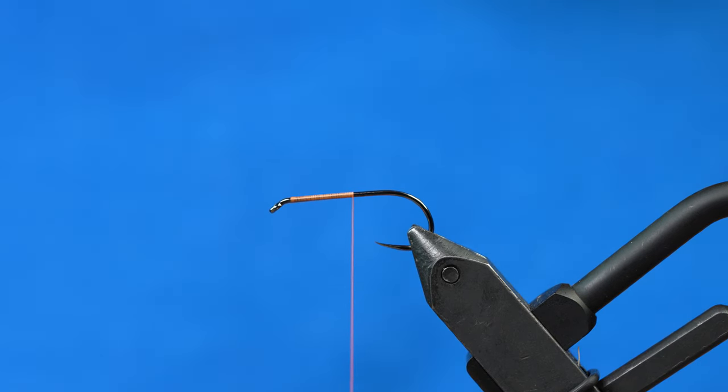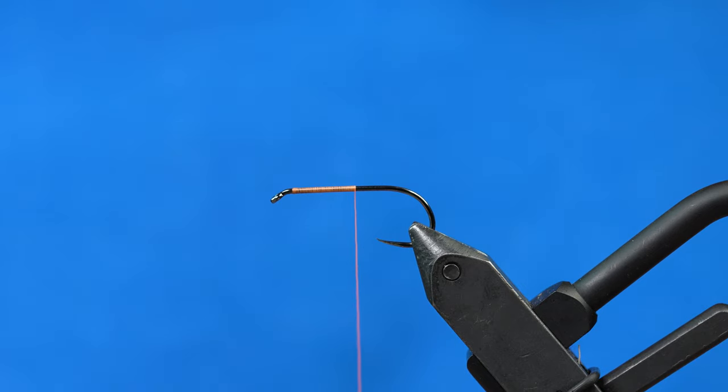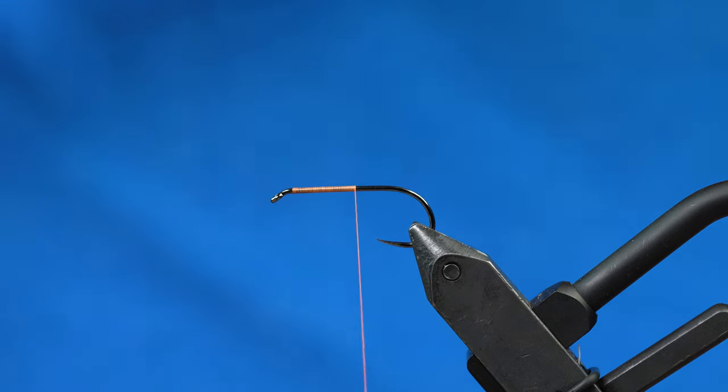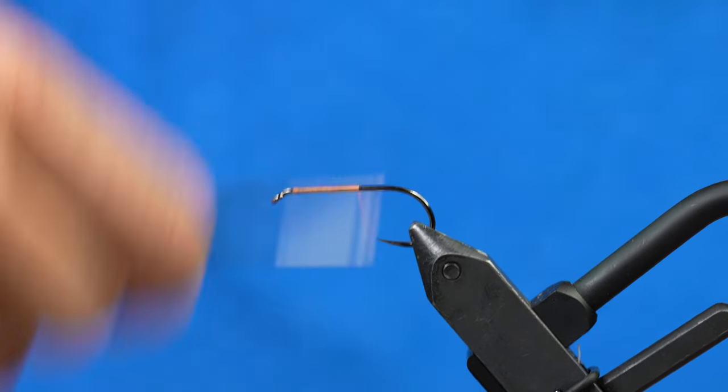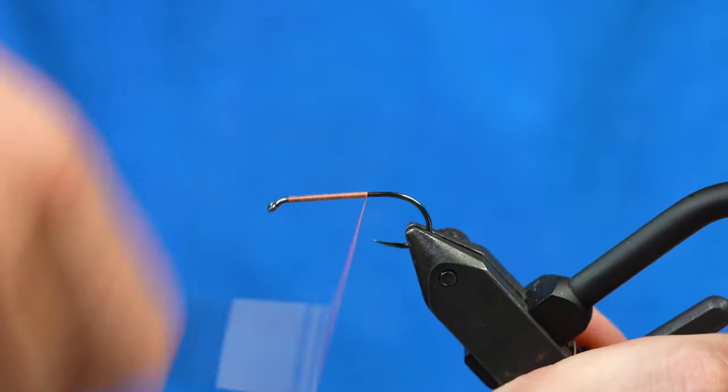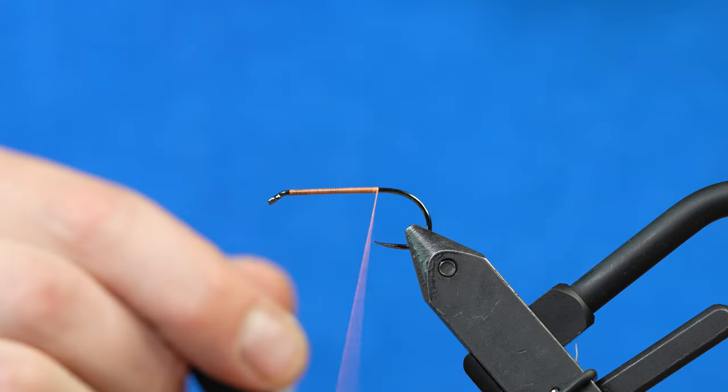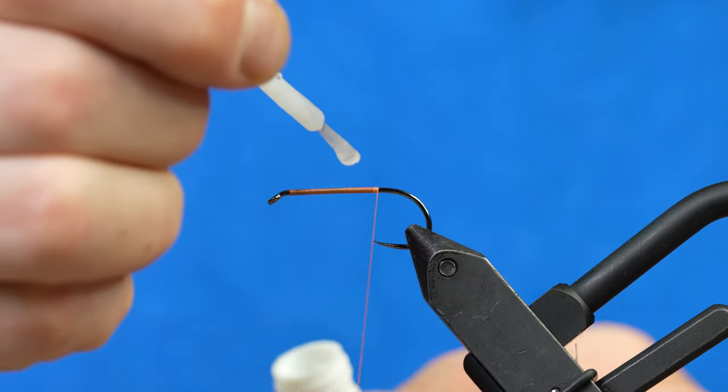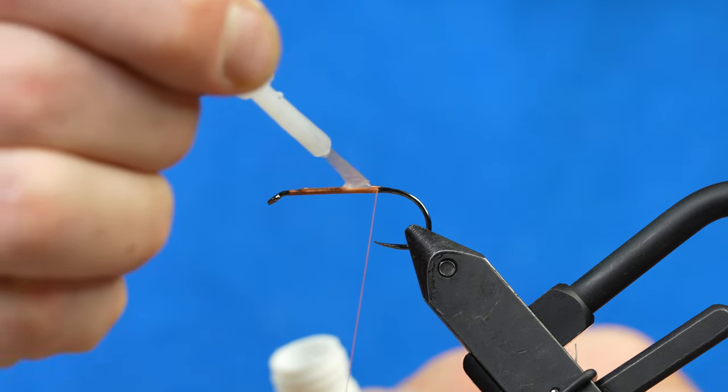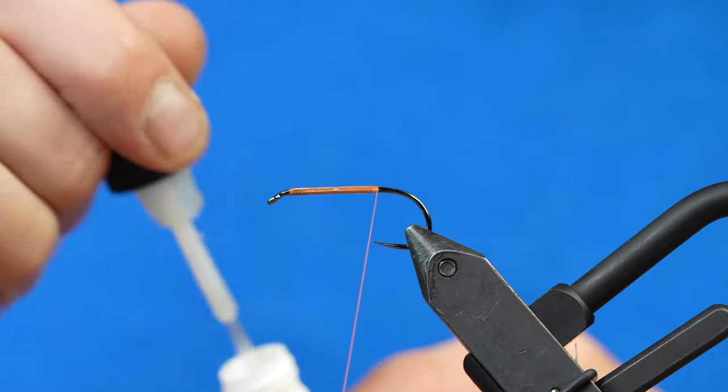We're also going to dress the hook with some Semperfli 6/0 fluorescent orange classic waxed. I'm going to dress this all the way down the shank. Give our thread a counterclockwise spin. While that's spinning, we'll throw some glue on our shank.